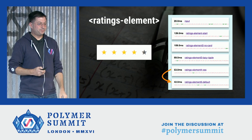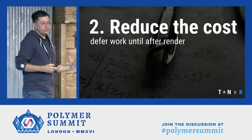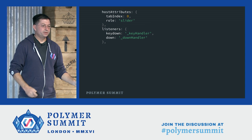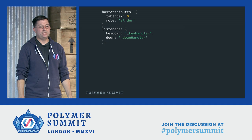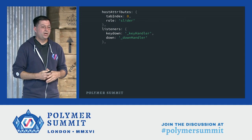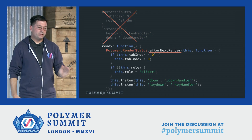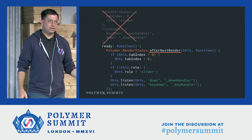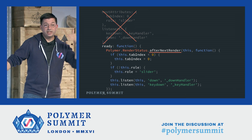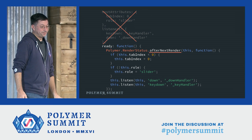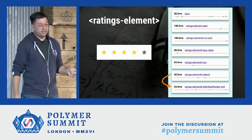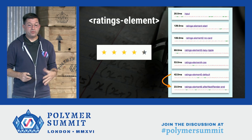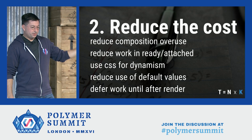One last change: we can defer work until after the initial render. In this case, those attributes and event listeners are not critical to the initial render. Where we're really trying to squeeze all the fat out, we can instead use a little helper that Polymer has called afterNextRender, which does the work after the render — setting tab index, the role, and adding event listeners imperatively then. This defers work until after render and gets our initial render as fast as possible. That was pretty significant and got us almost all the way to our goal of benchmarking against the native input.